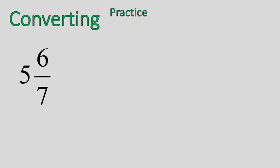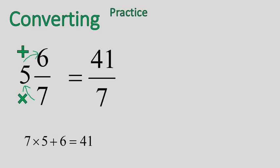So let's practice with 5 and 6 sevenths. We're going to do 5, 7 times 5, and then we're going to add 6. So 7 times 5 is 35. 35 plus 6 gives us 41. So we have a total of 41 over 7. That's how it works. It's pretty straightforward when you actually do the math.